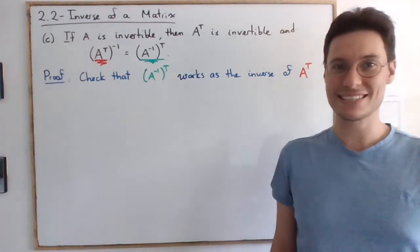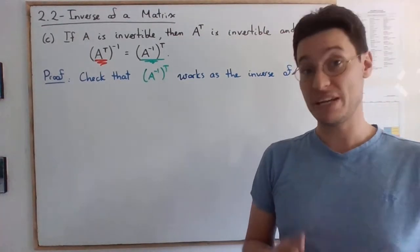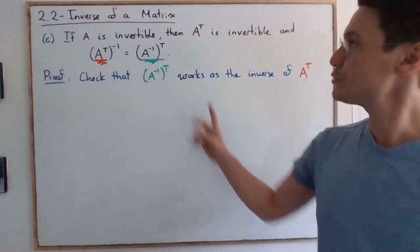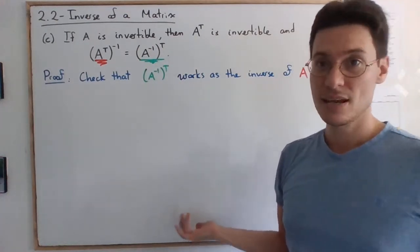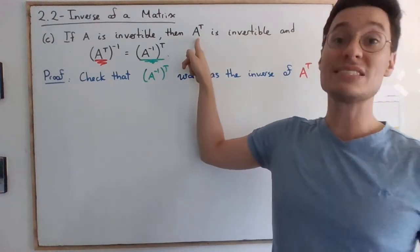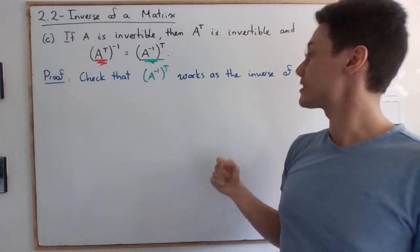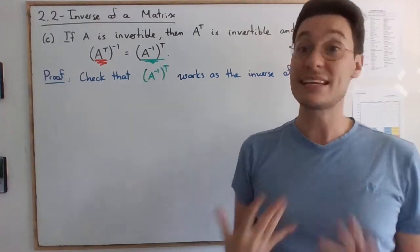Hi, linear algebra students! In this video, we are in 2.2 Inverse of a Matrix and we're going to prove the third property of invertible matrices. If A is invertible, then A^T is invertible and (A^T)^-1 = (A^-1)^T. So you take the inverse of the matrix and then transpose it.